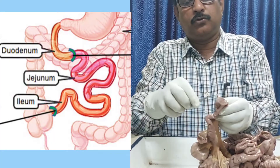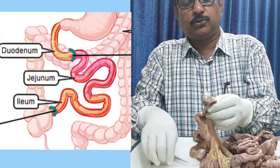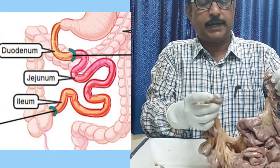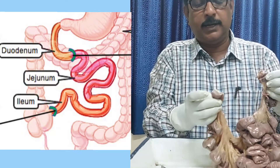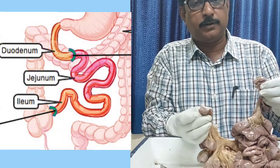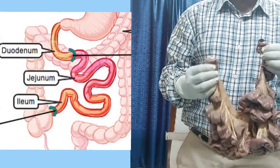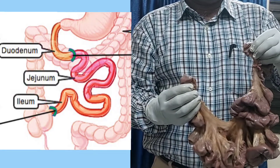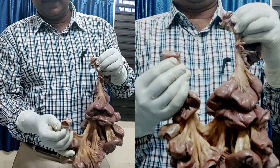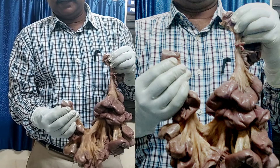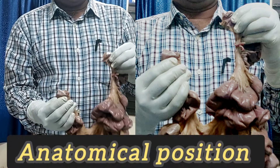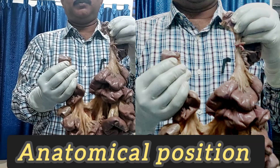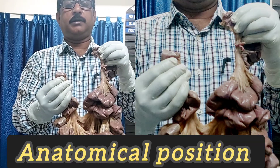This ileal opening is also directed towards the right side. So both openings are towards the right side — the jejunal opening is at the upper level and the ileal opening is at a somewhat lower level. The jejunal end is held inferiorly and towards the right by my left hand, and the ileal end is towards the right side at the lower level. This is the anatomical position of the jejunum and ileum.